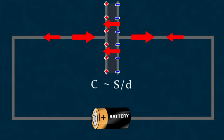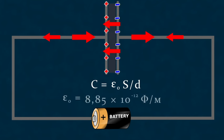If the insulator separating the conductors is some magical substance that does not possess electrical properties, then the proportionality constant will be the so-called electric constant — the same one that appears in Coulomb's law — equal to 8.85 times 10 to the minus 12 farads per meter. From this, we conclude that there are two ways to increase the capacitance of a capacitor: increase the area of the plates, or decrease the distance between them.